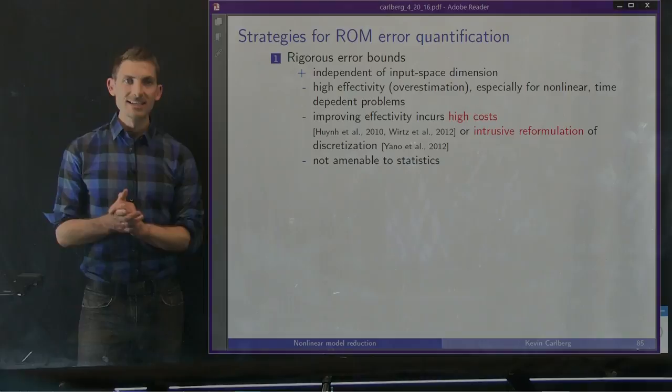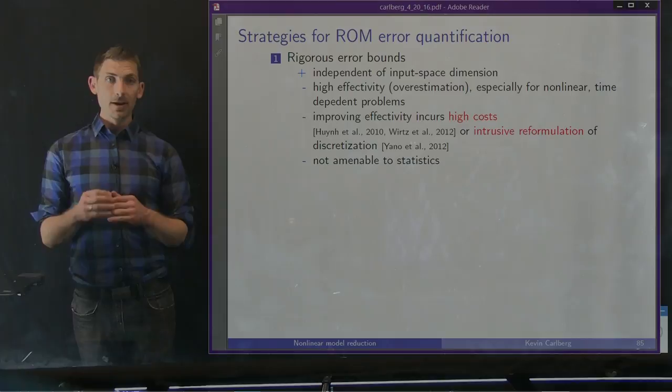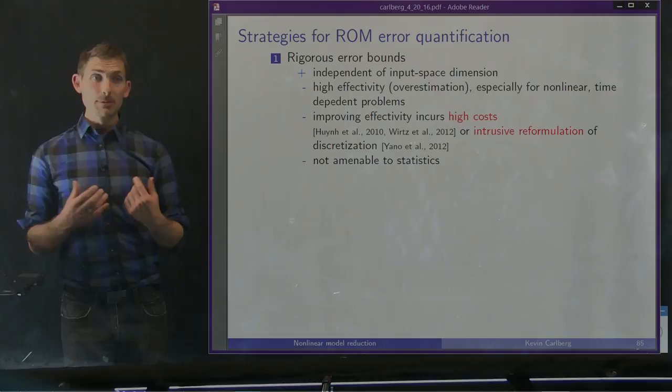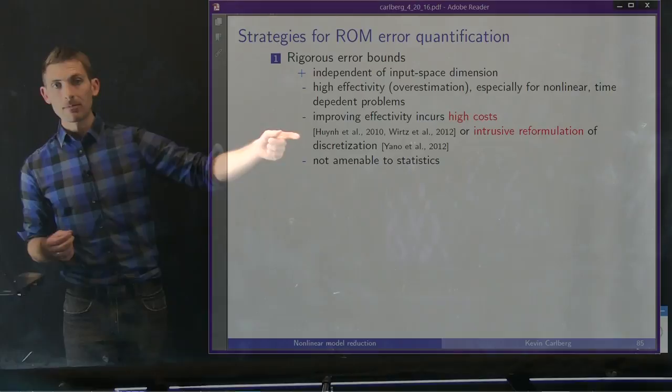So what are existing strategies for ROM error quantification? The most common approach is to devise rigorous error bounds, which is nice because we rigorously bound the error. But unfortunately they often exhibit high effectivity or overestimation, especially for non-linear time-dependent problems. And improving that effectivity often incurs very high costs or intrusive reformulation. So these successive constraint methods are very expensive.